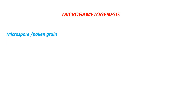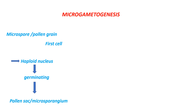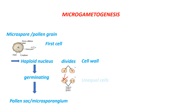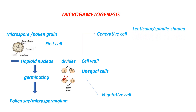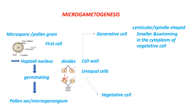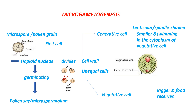With the formation of microspores, microsporogenesis ends. The male gametophyte now develops from the microspore in a process called microgametogenesis. The microspore is the first cell of the male gametophyte with a haploid nucleus. The pollen grain starts germinating while still in the pollen sac, dividing from the single nucleate stage to a double nucleate stage, forming two unequal cells: the generative cell and the vegetative cell. About 60% of angiosperms shed pollen in this two-cell stage.